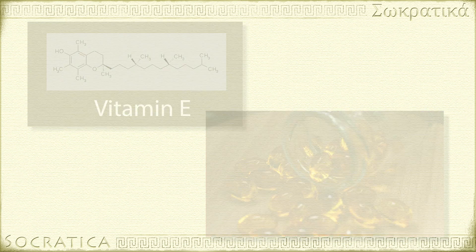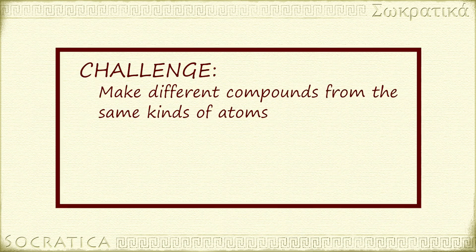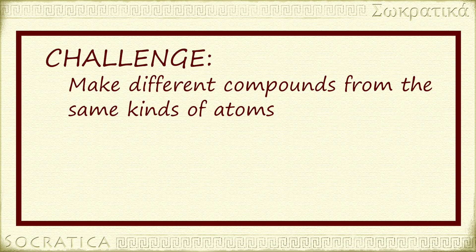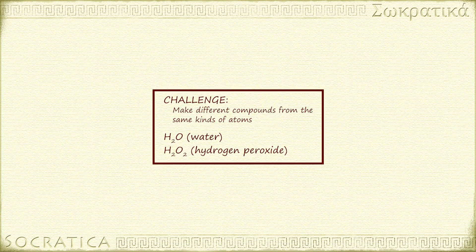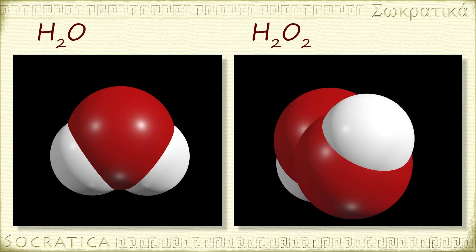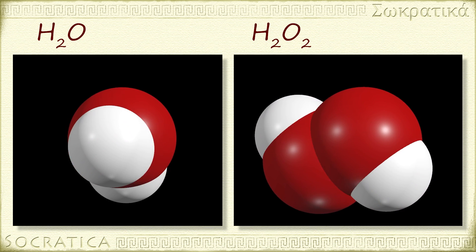There are different compounds you can make of the same two kinds of atoms. For instance, hydrogen peroxide, H2O2, is made of the same kinds of atoms as water. Hydrogen peroxide always has this exact composition: two atoms of hydrogen bound to two atoms of oxygen. Water and hydrogen peroxide are two distinct compounds.